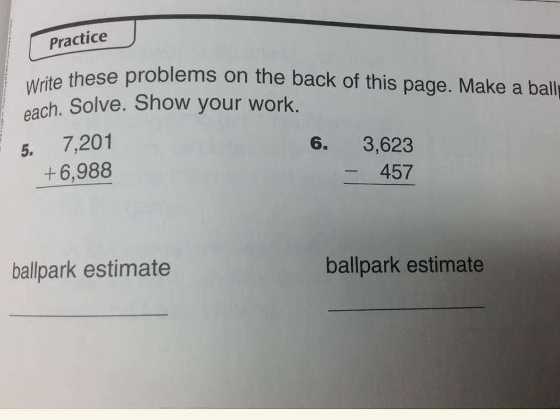One last thing. For this one, you have addition and subtraction practice with bigger numbers, making ballpark estimates. Both are four-digit numbers, so we'll round to the nearest thousand. 7,201 rounds to 7,000. This one is just a few away from 7,000. Your ballpark estimate is going to be this number, whatever you figure out.